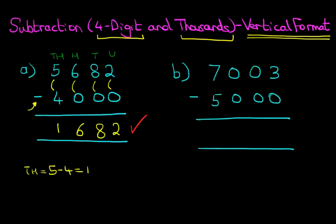We're not going to label the columns. We're going to go ahead and do the subtraction. 3 minus 0 is 3. 0 minus 0 is 0. The same again. And lastly, we have 7 minus 5. 7 minus 5 is 2.